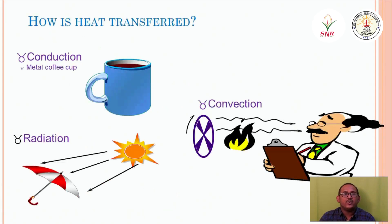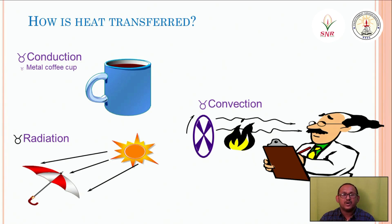Heat is transferred from one object to another in three ways: conduction, convection, and radiation. These are the three parameters by which heat is transferred from one object to another.